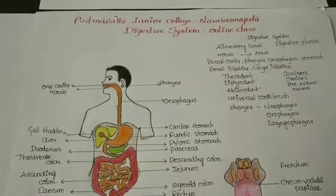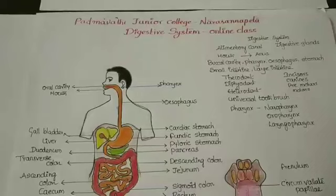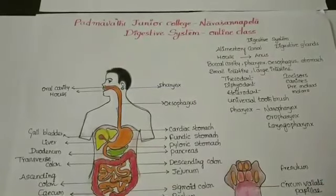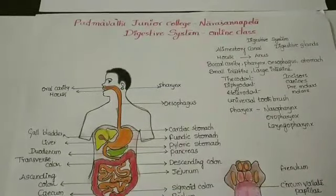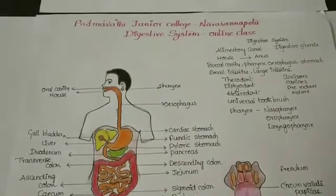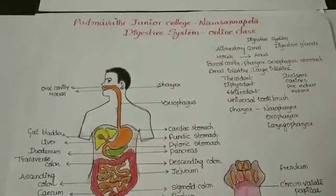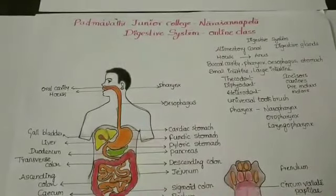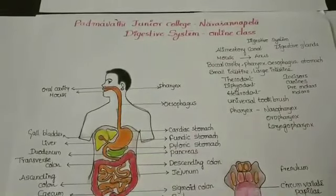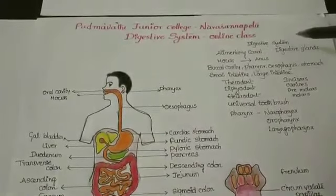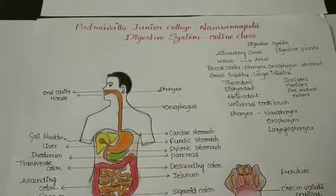Hi Friends, welcome to Padmavati Junior College Narsanabeta Online Classes. Today we are going to learn about the Human Digestive System. The Human Digestive System consists of the Alimentary Canal and Digestive Glands.